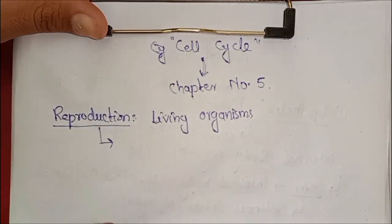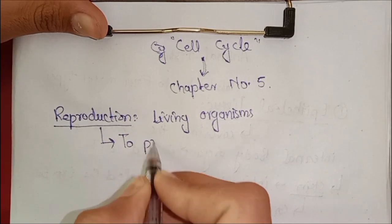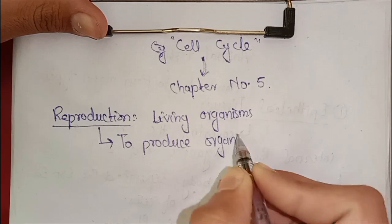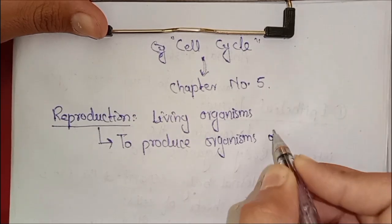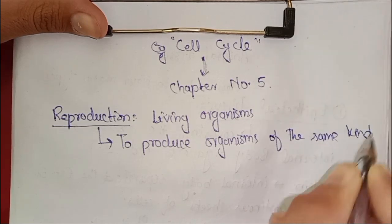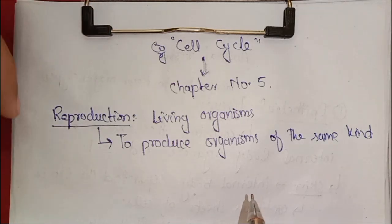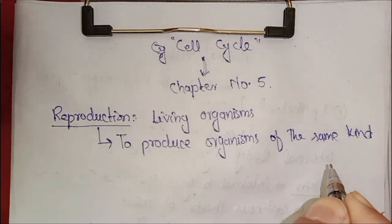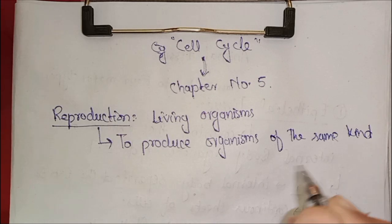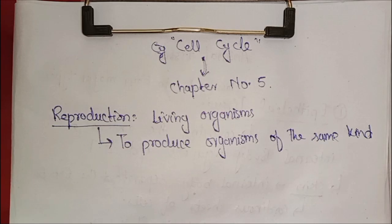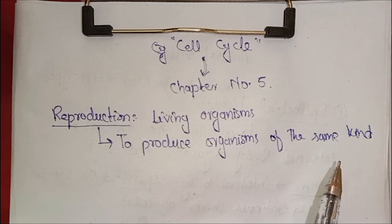The topic of reproduction: living organisms have the ability to reproduce. Reproduction is the process in which a living organism produces organisms of the same kind. This process is called reproduction.